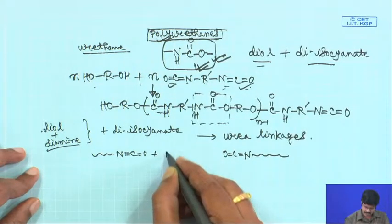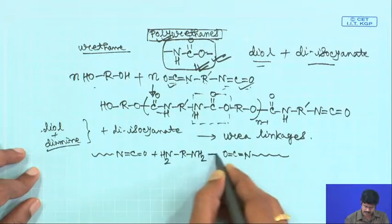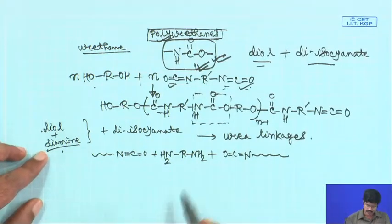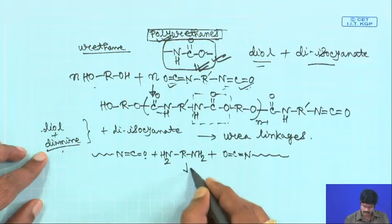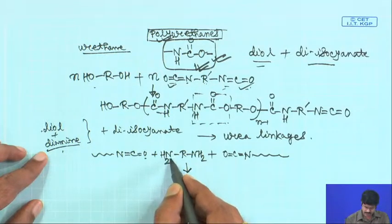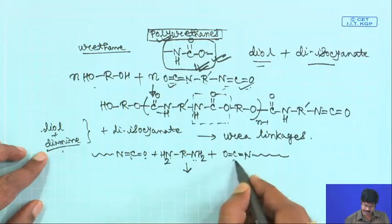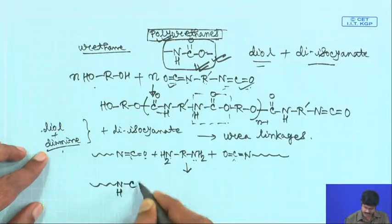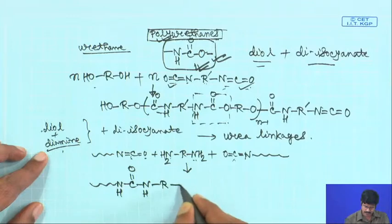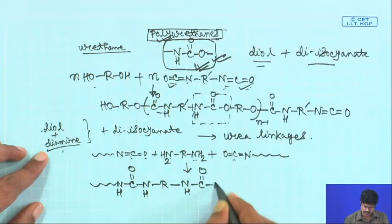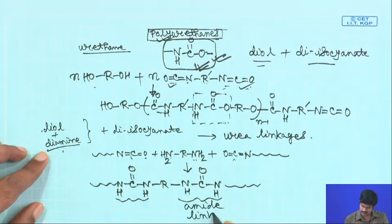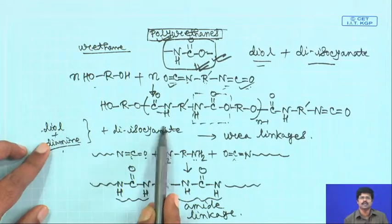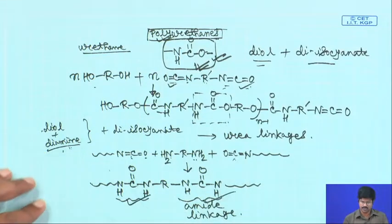Two of these molecules can react with a diamine, because you also added a diamine along with the diol. When isocyanate reacts with amine you get an amide linkage — in this case it will be a urea linkage. This lone pair can attack on the carbon, and ultimately you will get the linkage C-O-N-H on one side; this is the urea linkage. So you have urea linkages produced in the system.